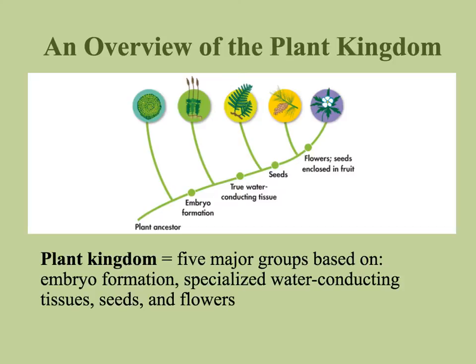Now we're going to go over a brief overview of the plant kingdom. The plant kingdom is divided into five major groups. Just a couple years ago it was still four, but now most scientists have added green algae, making it five groups. The groupings are based on how they form embryos, how they conduct water from one part of the plant to another, whether they form seeds, and whether they are able to form flowers.